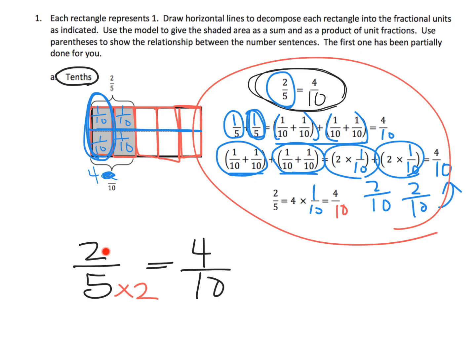So that's a lot of writing that really is just the old-school way of saying two-fifths is equal to four-tenths because each fifth got doubled — each of the shaded fifths got doubled. But at this point we're not ready to just teach them an algorithm; we're really trying to develop understanding. Even if it feels a little laborious at the time, in the long run it's going to be better for our students.